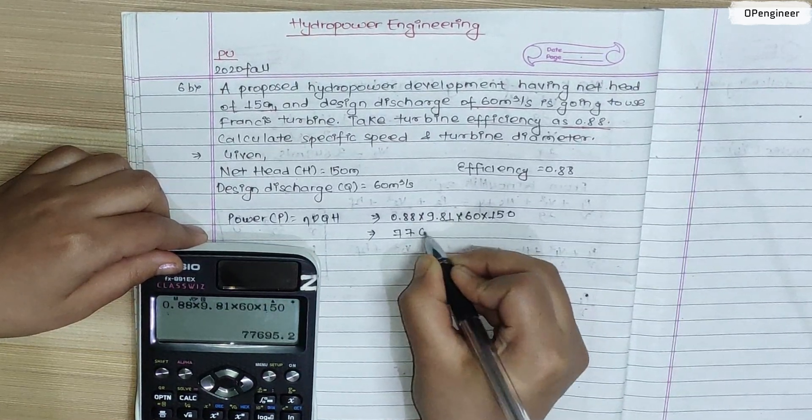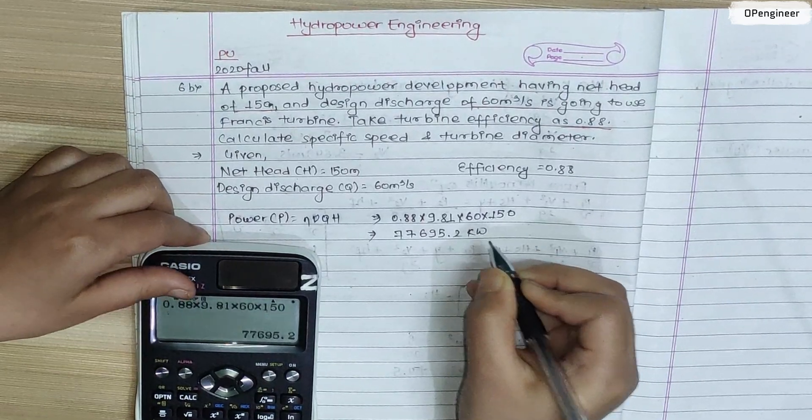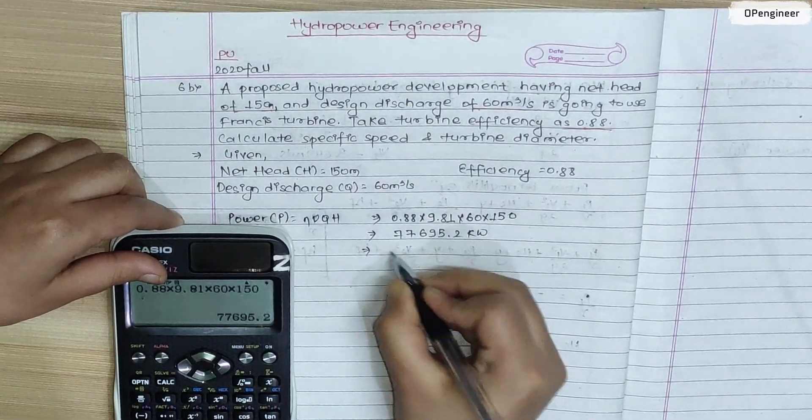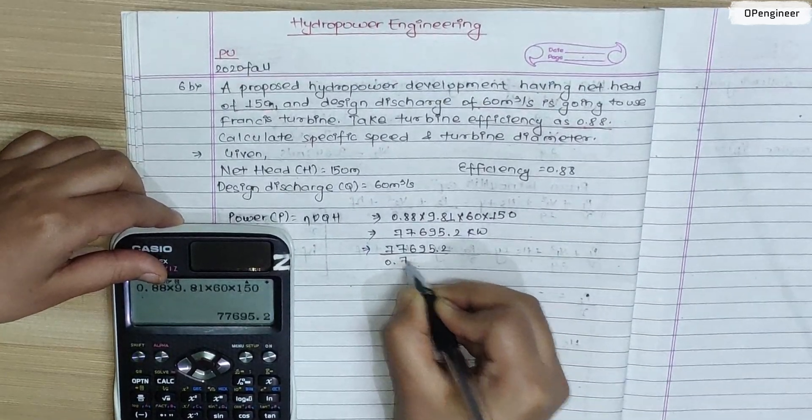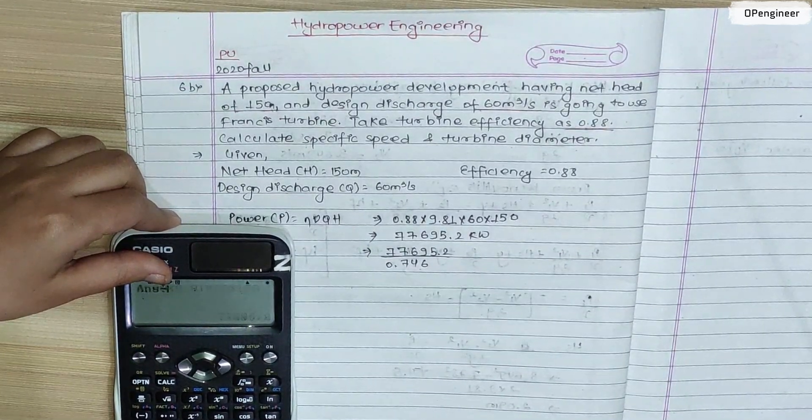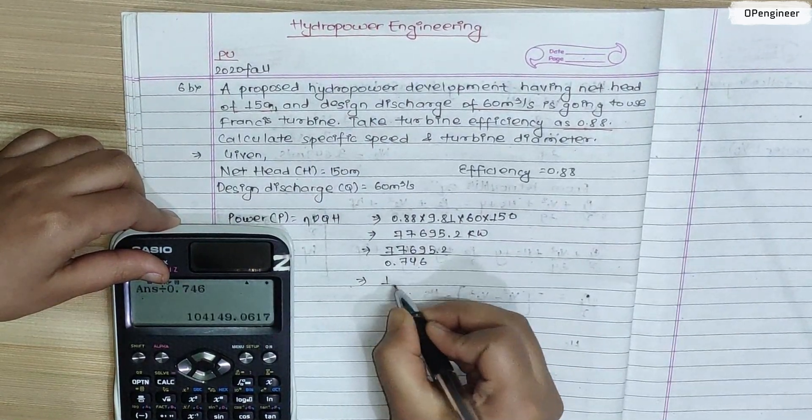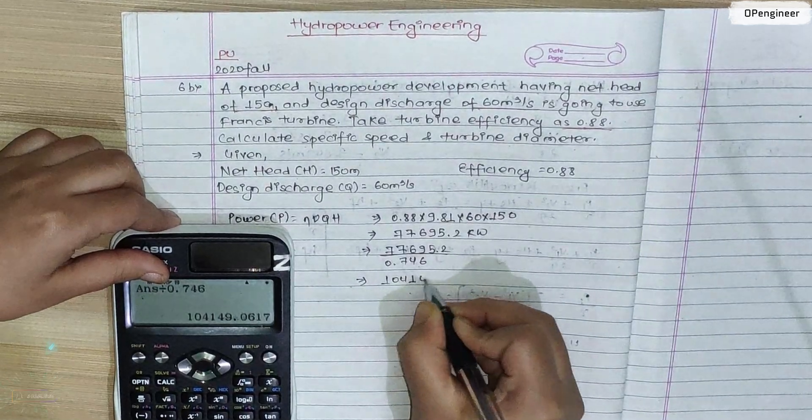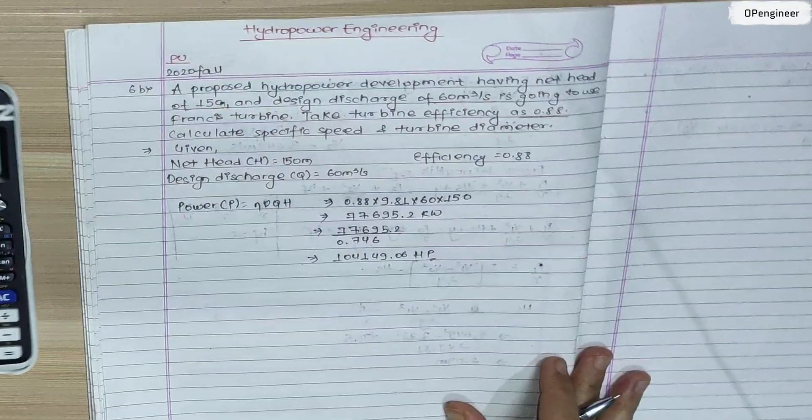The efficiency is 0.746 divided by 0.746. The power of turbine is 104,149.06.